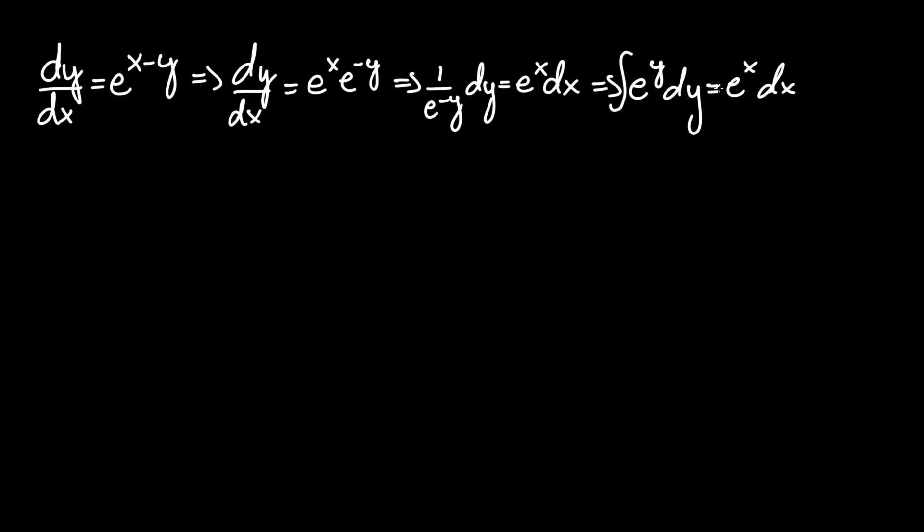Now we can integrate both sides to their respective variables. The integral of e is just the same term, so it results in e^y = e^x + C. We'll keep the constant on the right side.